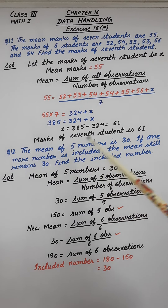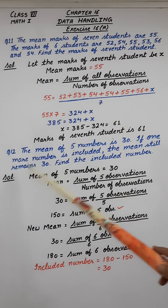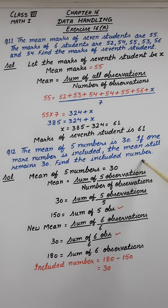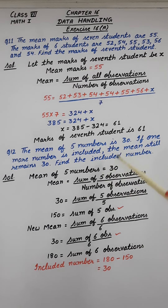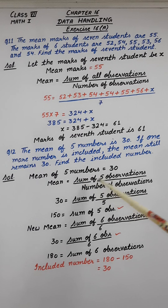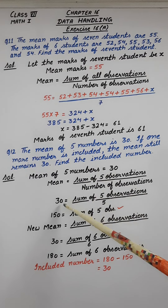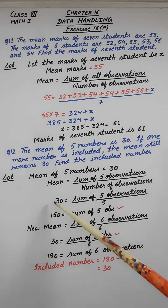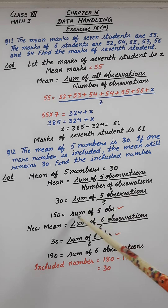Coming to question 12: the mean of 5 numbers is 30. If one more number is included, the mean still remains 30. Find the included number. The formula for mean is sum of all observations upon number of observations. Mean is given as 30 equals sum of 5 observations upon 5. On transposing, 5 into 30 gives 150, which equals the sum of 5 observations.